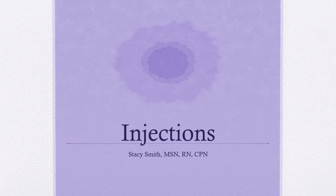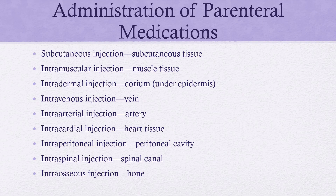These are all the different types of injections, but we're going to focus on the top three: subcutaneous, intramuscular, and intradermal. Subcutaneous goes into that adipose or fat tissue, and it's really important to think about how vascular the tissue is because that determines how quickly the medication is going to be absorbed. There are not a lot of vessels or blood supply to that adipose tissue, so the absorption rate subcutaneously is relatively slow.